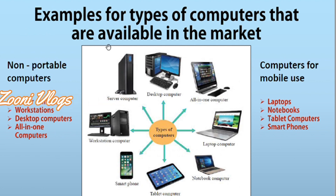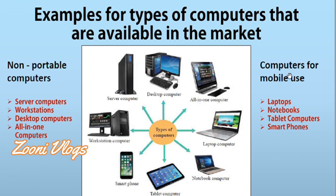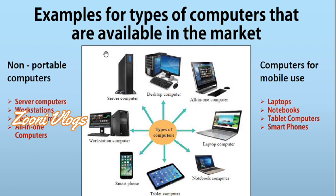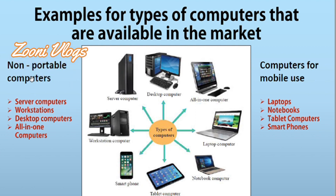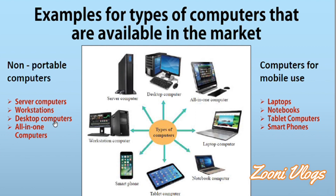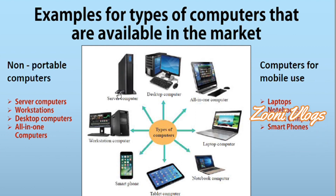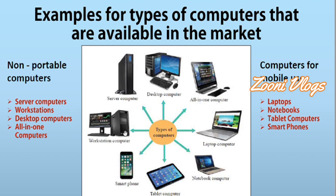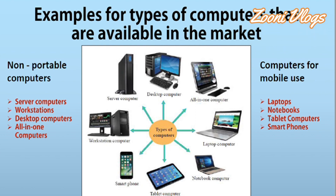Examples of types of computers available in the market: we can mainly categorize them into two parts. The first is non-portable computers and the second is computers for mobile use. For non-portable computers, we can divide them into four parts: server computers, workstations, desktop computers, and all-in-one computers. You can see the pictures of each: server computer, workstation, desktop computer, and all-in-one computer.